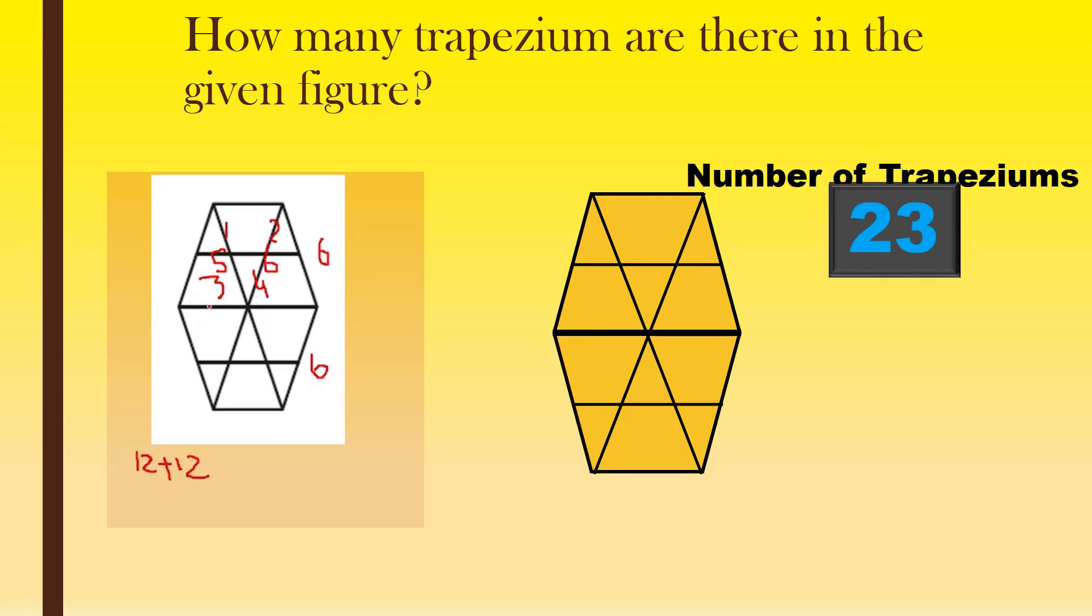Then the rhombus. Here it's a rhombus, so it's one. And this is a rhombus, two. Two rhombuses. So total, twelve plus twelve plus two, there are twenty-six trapeziums in this figure.